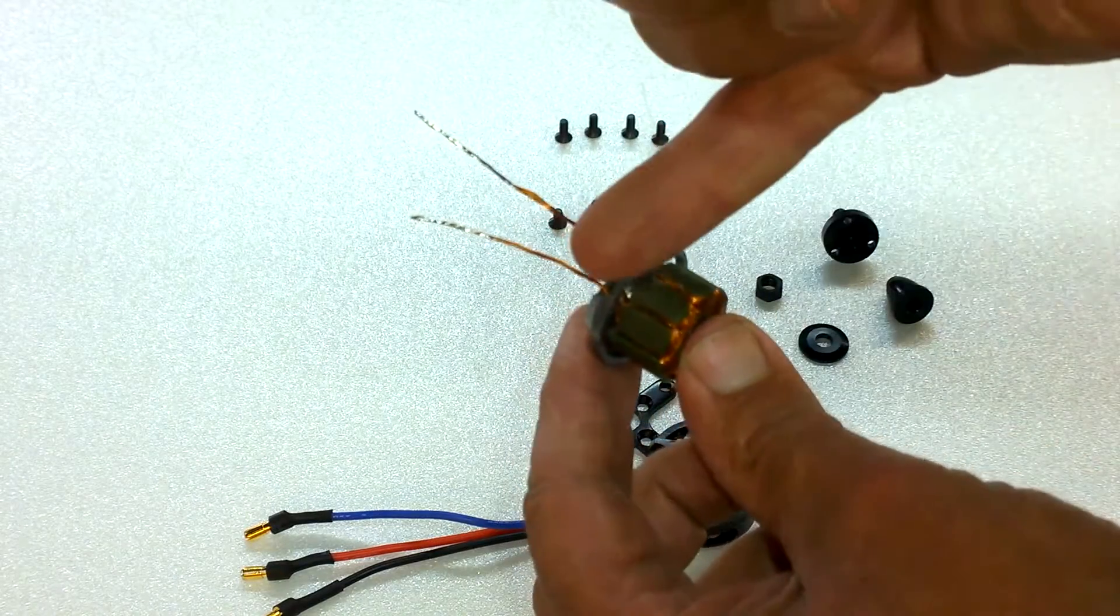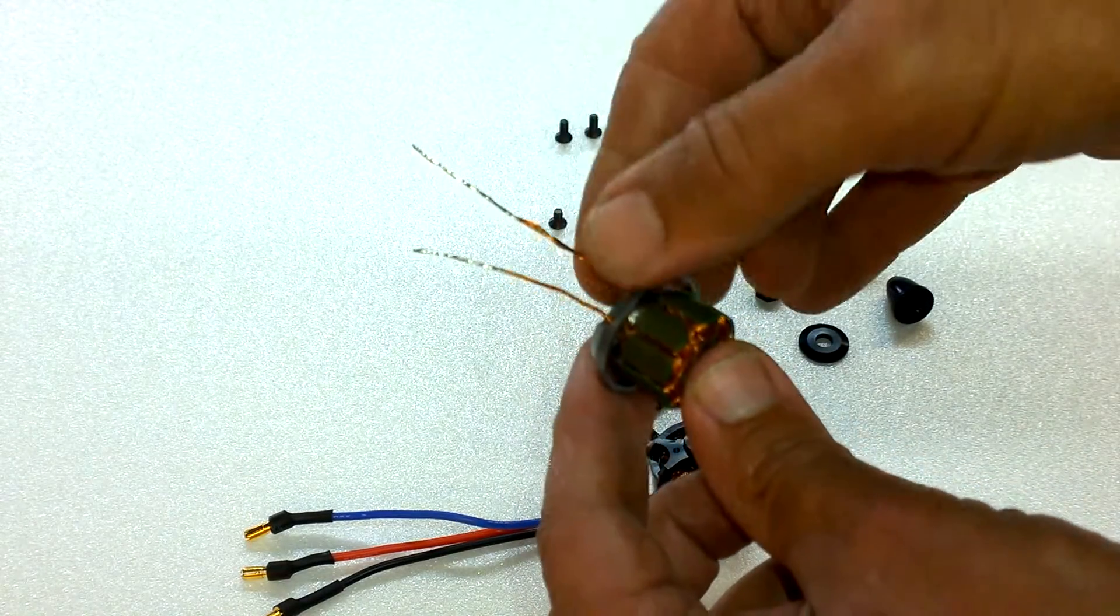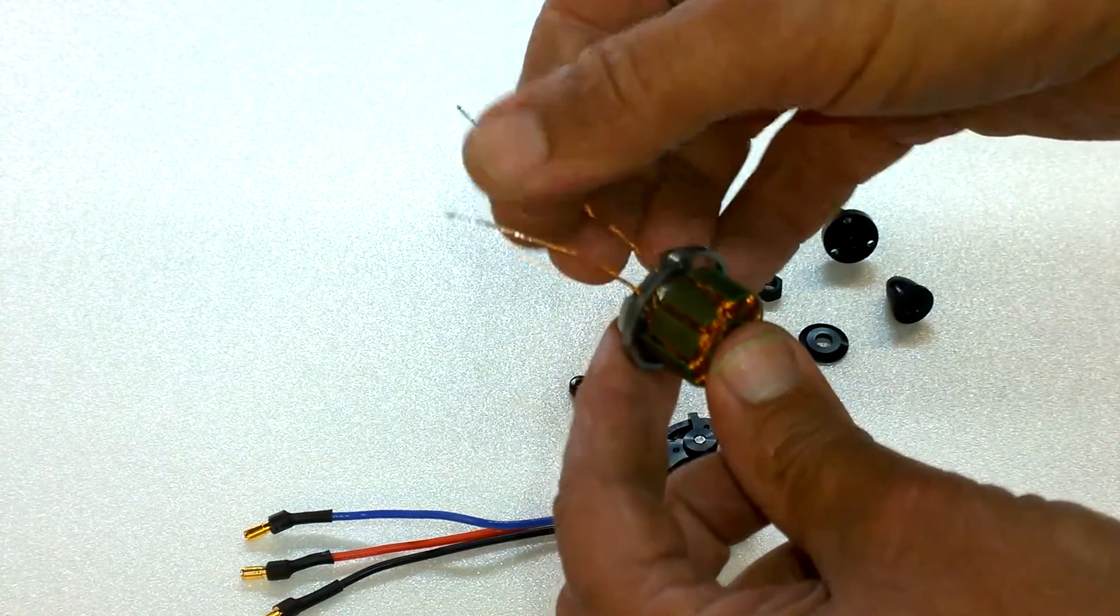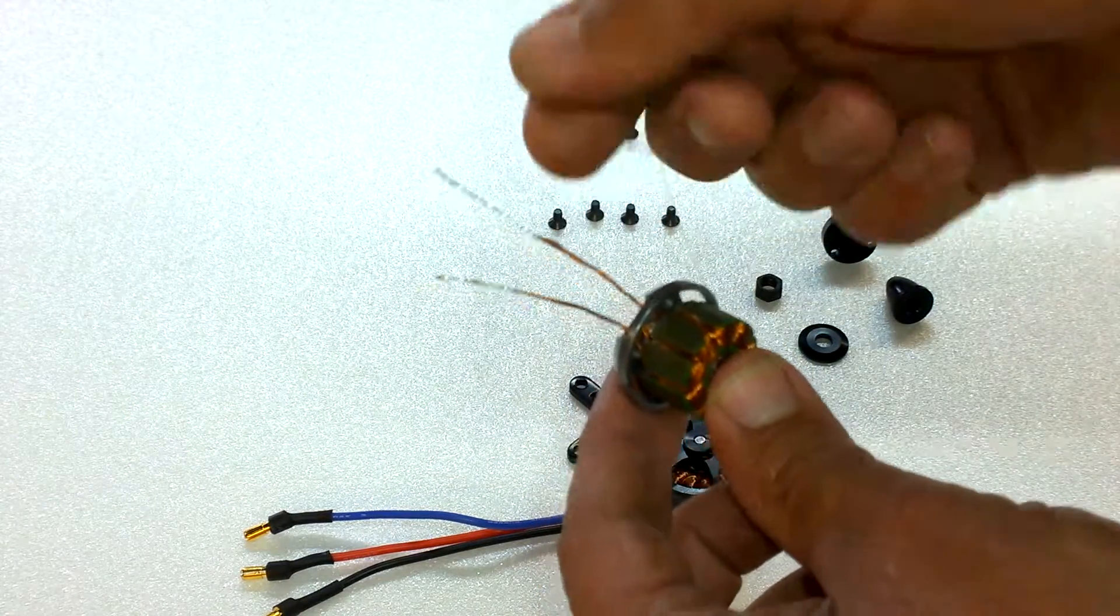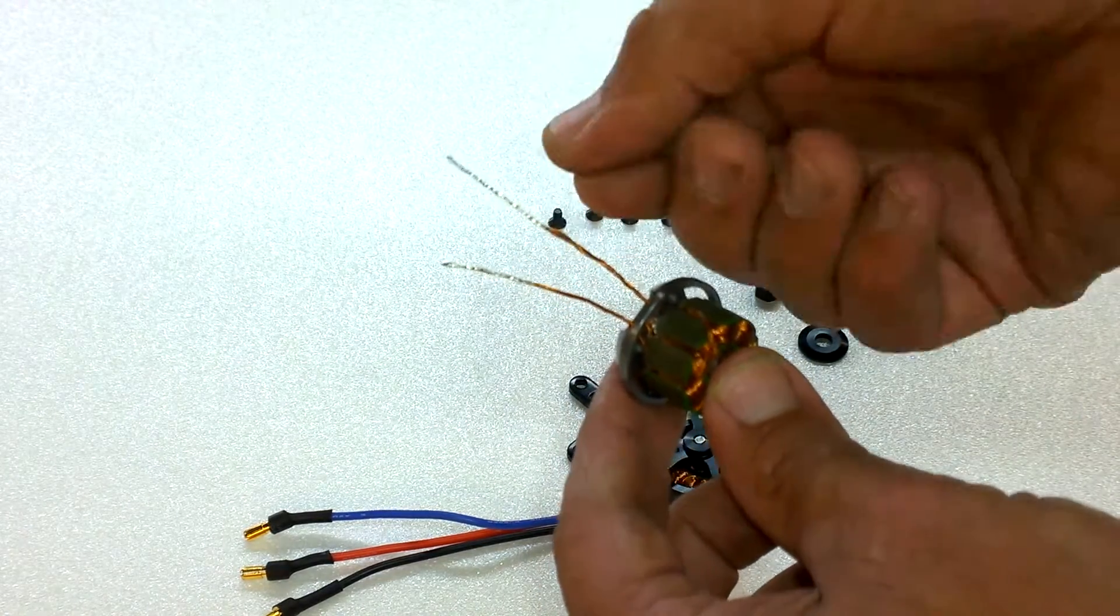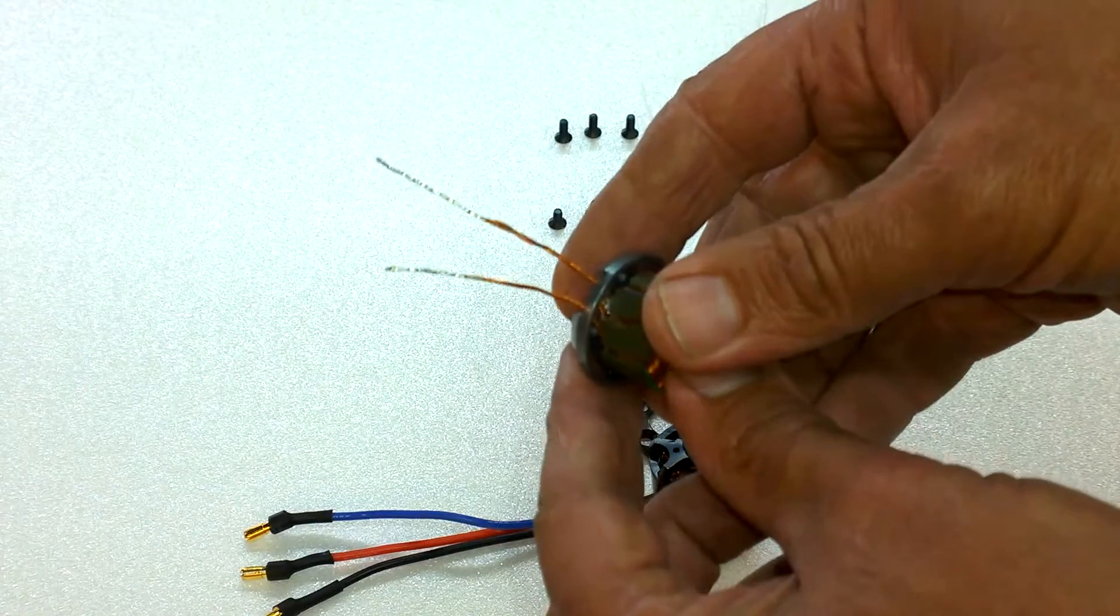You can see one of my leads has broken off already because there should be three here, and they're very short leads. Quite a stiff wire, and obviously with continued action, these leads will break.